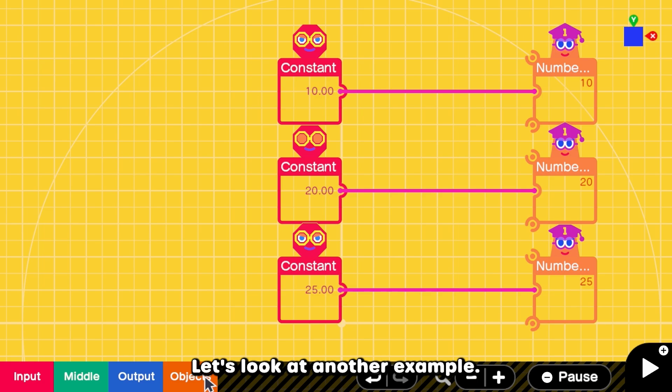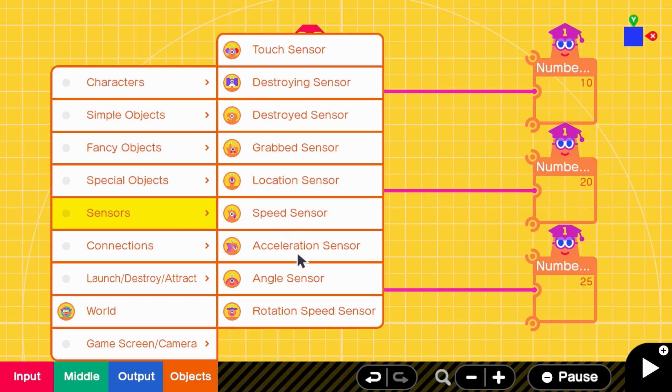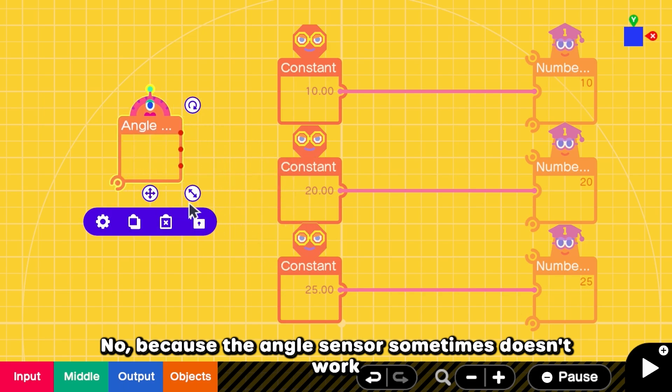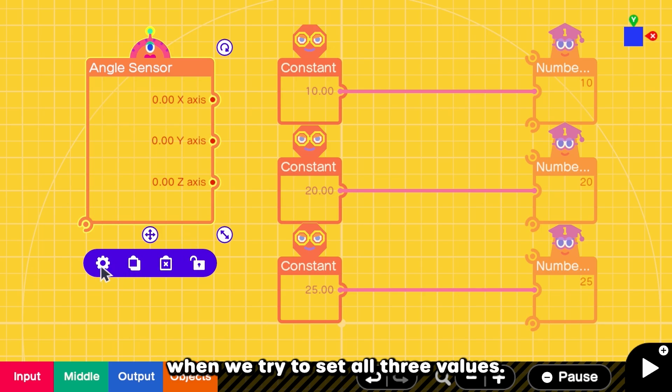Let's look at another example. We have three constant nodons. Can we use X, Y, and Z angles to replace these constants? No, because the angle sensor sometimes does not work when we try to set all three values.